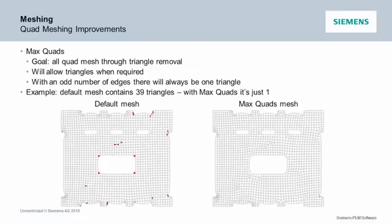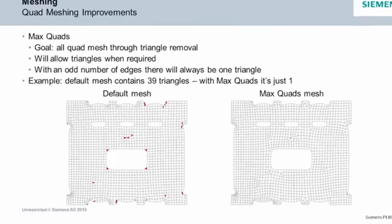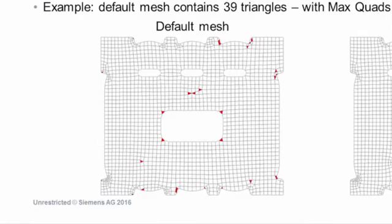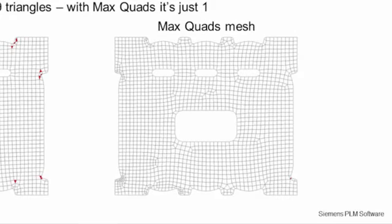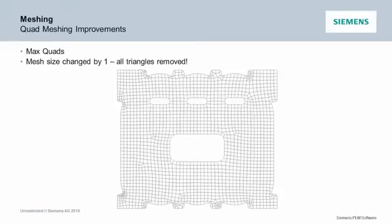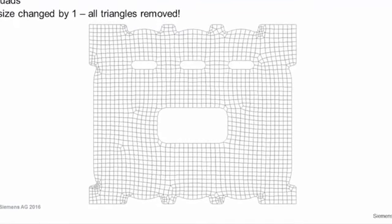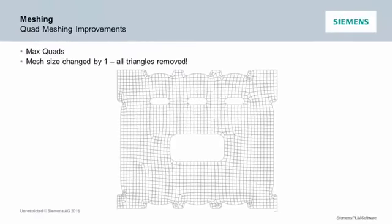We looked at a couple different ways of doing this, but what we were able to do is take the existing mesher. We wrote some code with a high-speed data structure that knows the connections of the mesh, and we just move the triangles around, connect them up, and basically take them out of the mesh. With max quads turned off you get the default mesh; turn on max quads and it just takes those triangles out. Since there's an odd number on the periphery you have to have at least one triangle, but if you change the mesh size you can get an all-quad mesh.